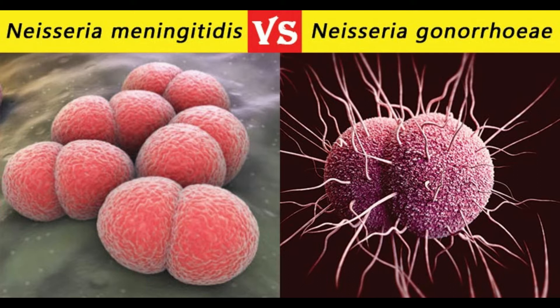3. Cell morphology: N. gonorrhoeae is kidney-shaped with opposing ends concave; N. meningitidis is a semicircular diplococcus with flat opposing ends. 4. Capsule: N. gonorrhoeae has an absent capsule; N. meningitidis has a capsule which is antiphagocytic and an important virulence factor. 5. Pili: N. gonorrhoeae most often moves using 1-retracting pili; N. meningitidis most often moves using 4-pili.